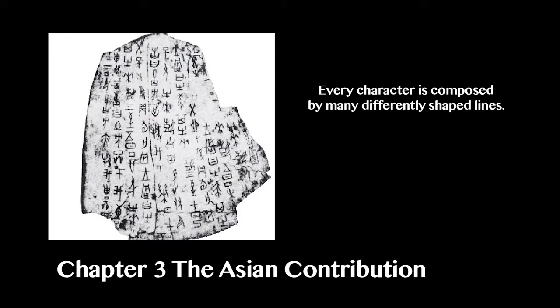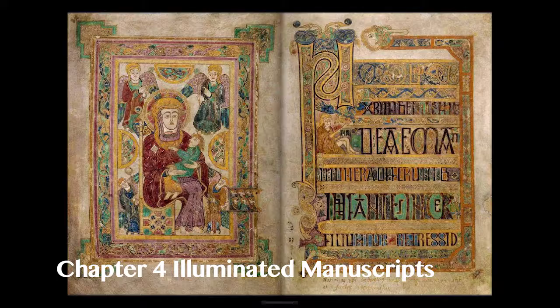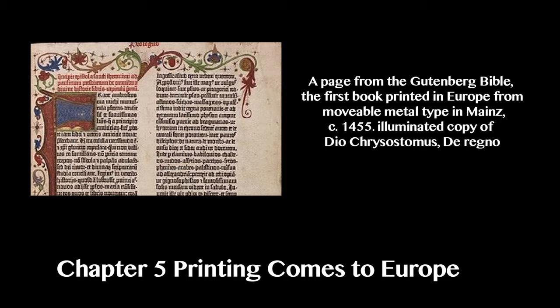Illuminated manuscripts were vibrant with the luminosity of gold leaf. Many came from Islamic countries and Europe with reproduction of religious books. With paper making its way to Europe via the Chinese, who also brought relief woodblock printing by the 1400s, the demands for book production led to movable typography and copperplate engraving.